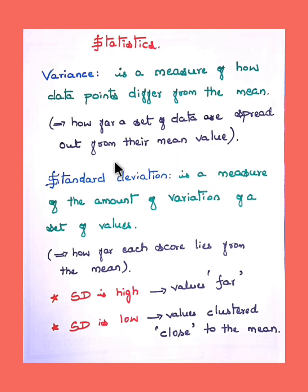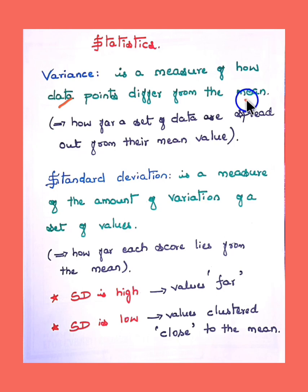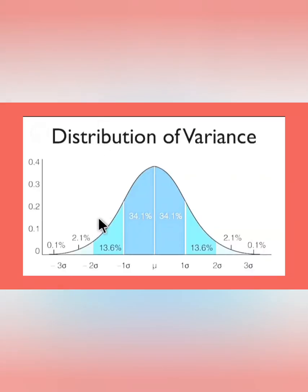What is variance? Variance is a measure of how data points differ from the mean value. In statistics, it's all about data — we record the values, tabulate them, draw the graph, and get the result. We know that the mean value is the average value. Variance tells us how far a set of data points are spread out from their mean value.